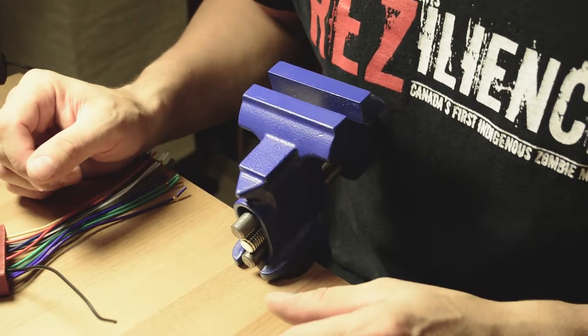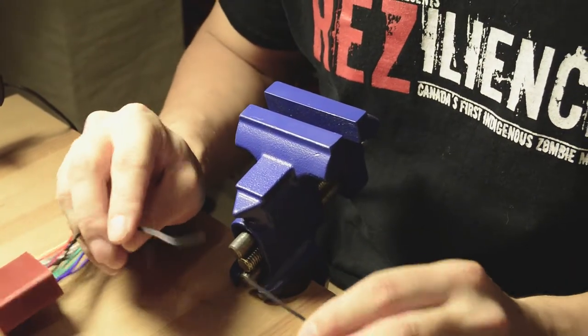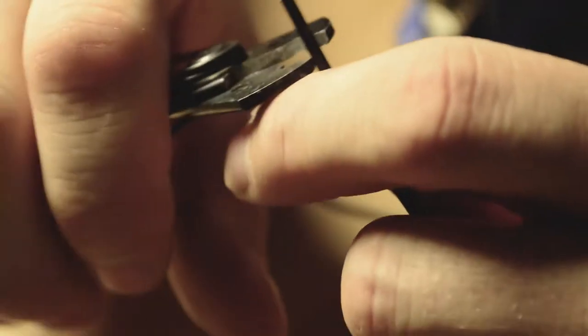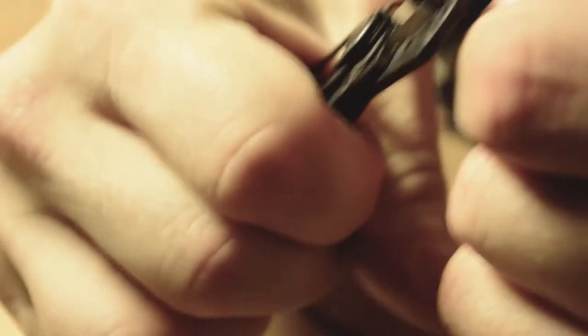The first style of soldering I'm going to show you is soldering two wires to each other. The first step is to strip the wires. Again we're going to be using our Miller pliers. Basically apply just enough pressure and pull. We're going to do that again. Just enough pressure and pull.